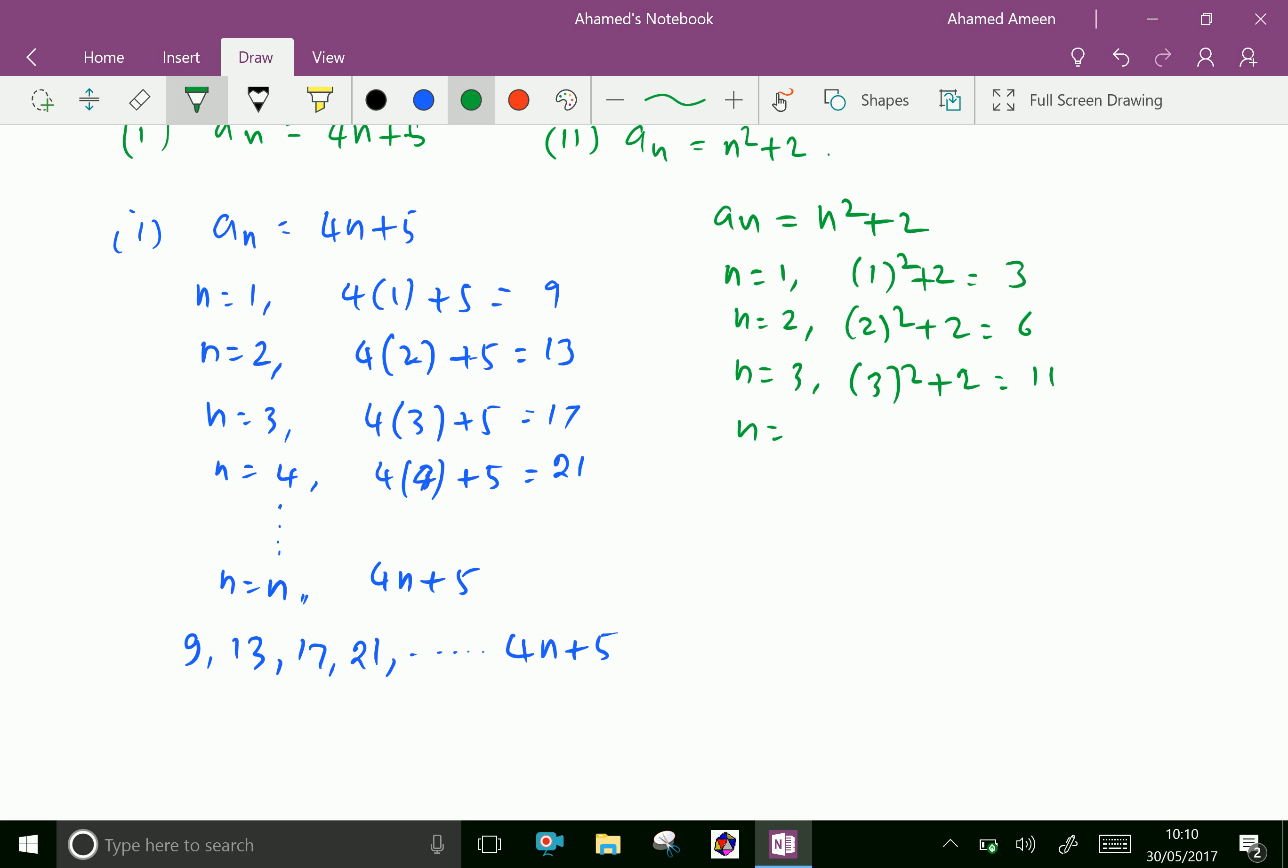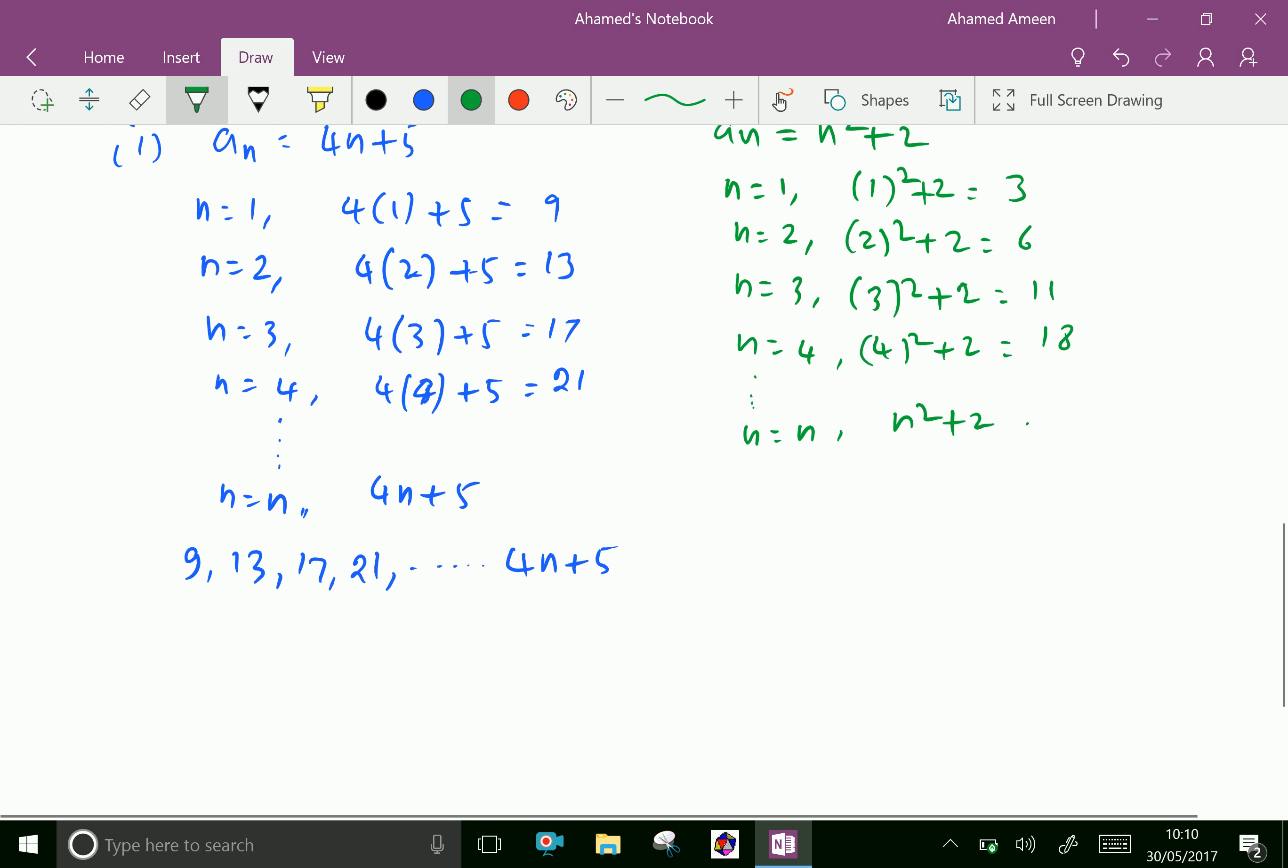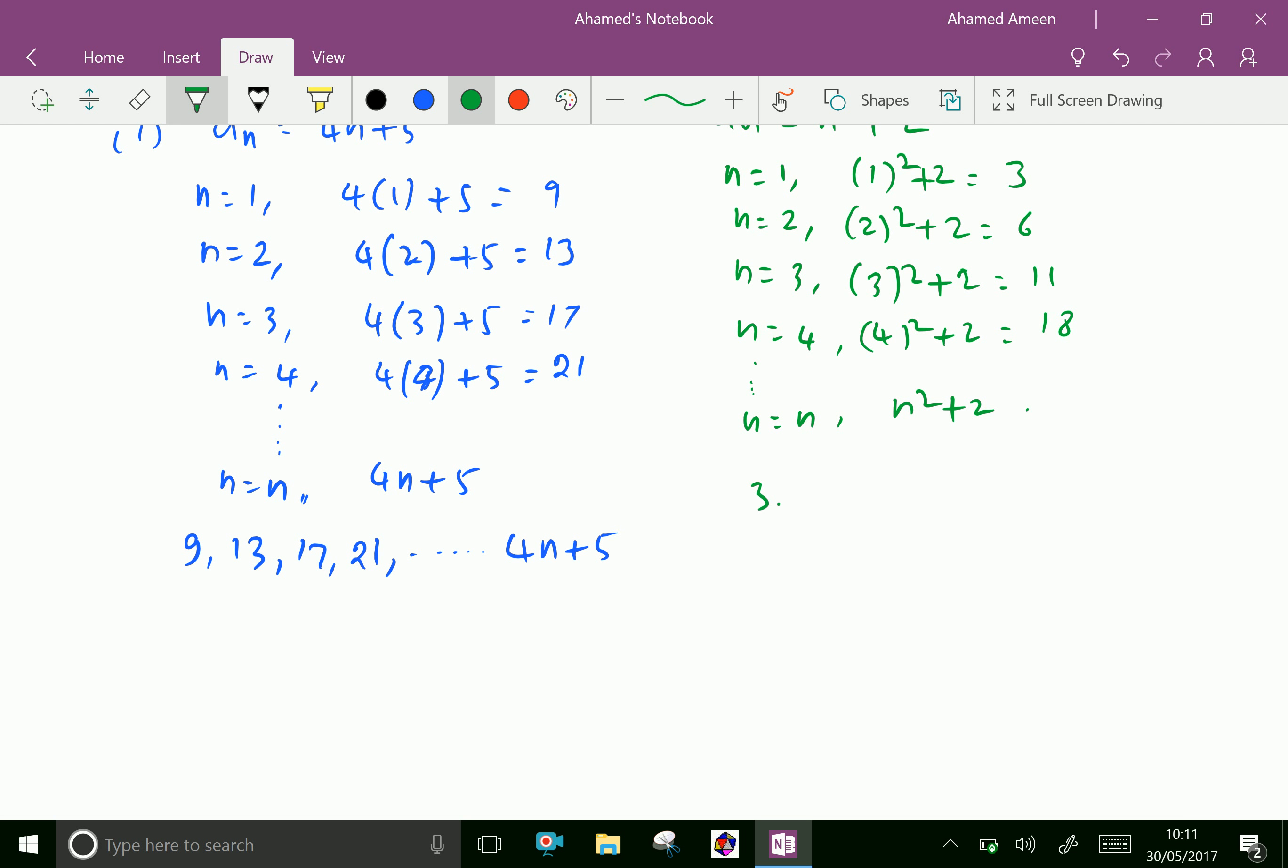n equals 4. 4 squared plus 2 equal 16 plus 2 is 18. Then n equal n, which is n squared plus 2. Now we can write the sequence which is 3, 6, 11, 18, dot dot dot n squared plus 2.